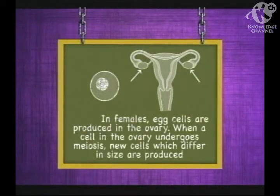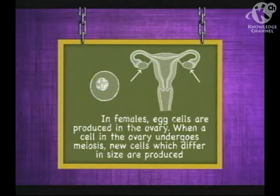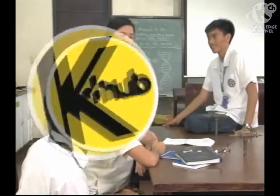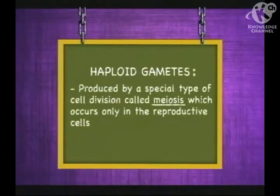In females, egg cells are produced in the ovary. When a cell in the ovary undergoes meiosis, new cells which differ in size are produced. Gametes cannot undergo mitosis since it will double the number of their chromosomes. Haploid gametes are produced by a special type of cell division called meiosis, which occurs only in the reproductive cells.